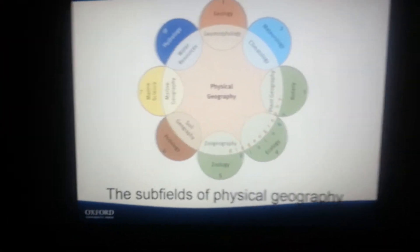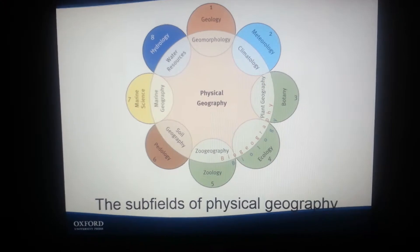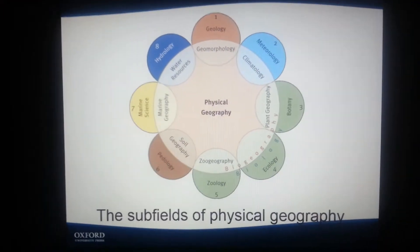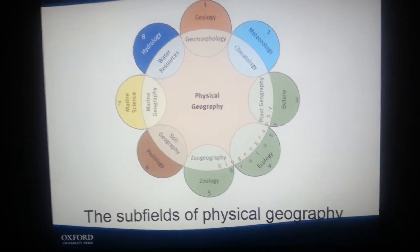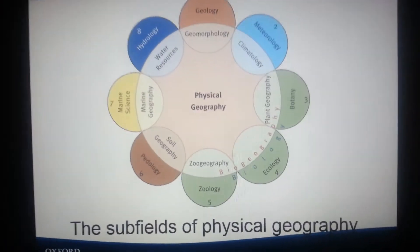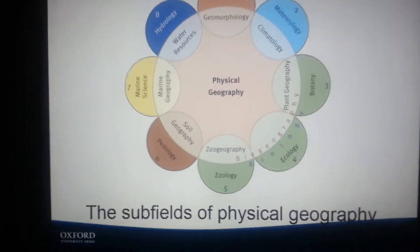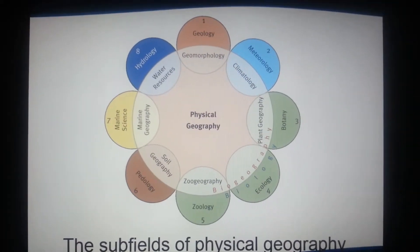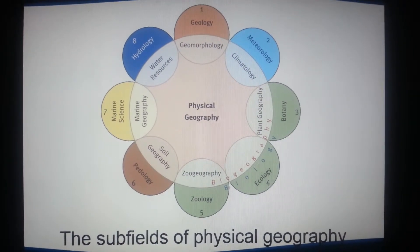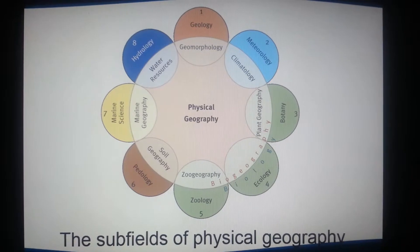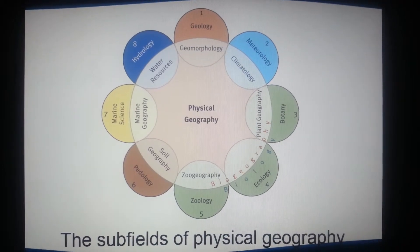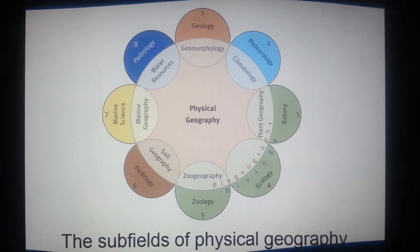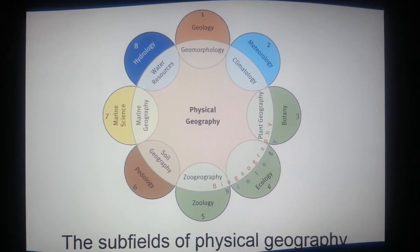Here is a diagram of the subfields of physical geography. As you can see, you have geomorphology, climatology, plant geography, biogeography, zoogeography, soil geography, marine geography, and water resources.